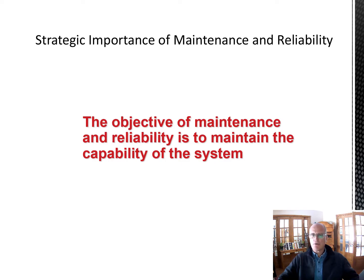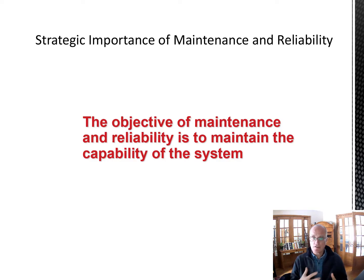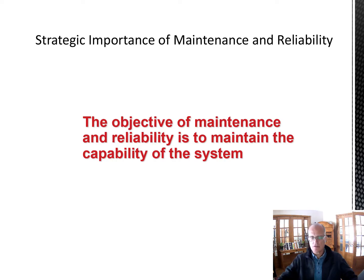Maintenance and reliability are important because it's important to maintain the performance of a system — usually a production system, but it can also be a service system. We talk about reliability to ensure that it works and maintenance to reduce breakdowns. So reliability is the probability of a breakdown, and maintenance is to avoid a breakdown.